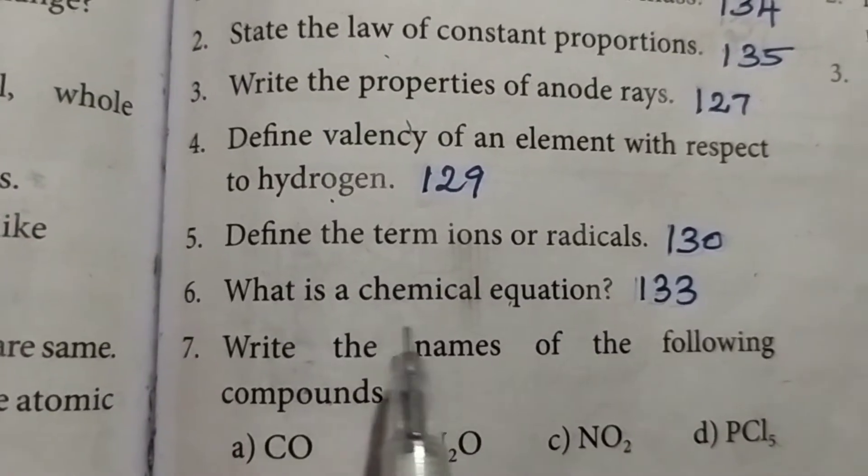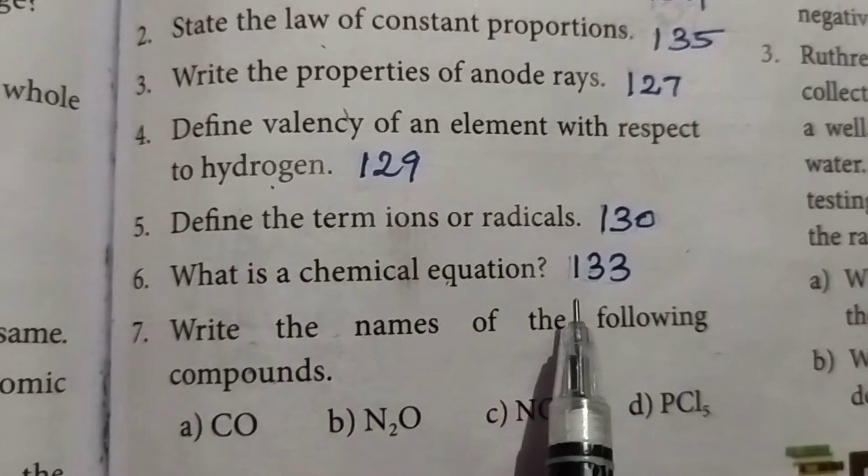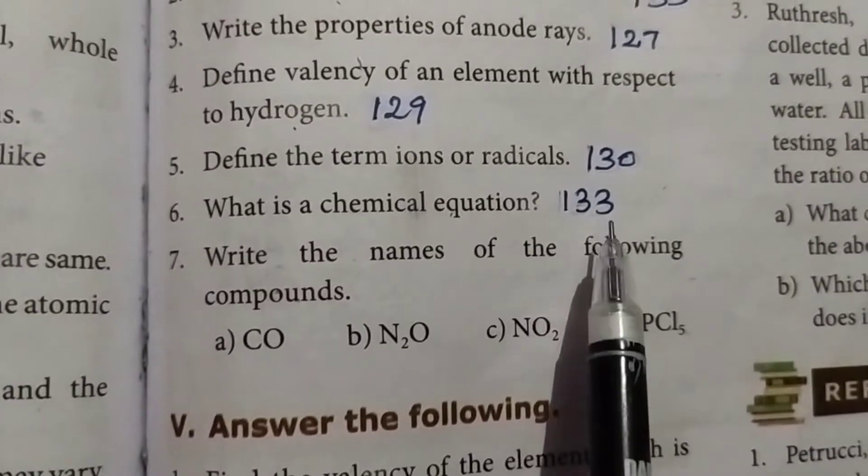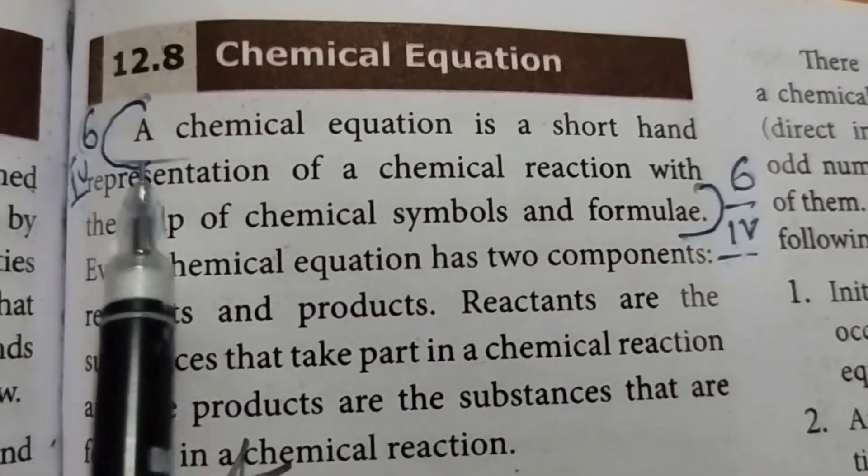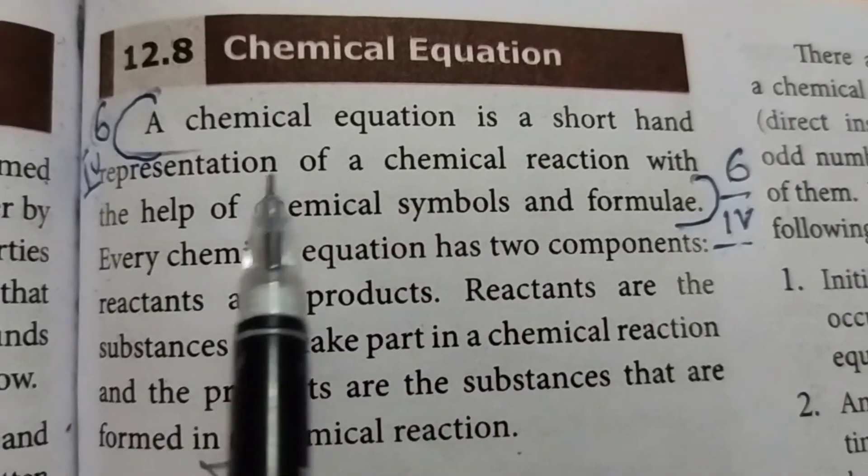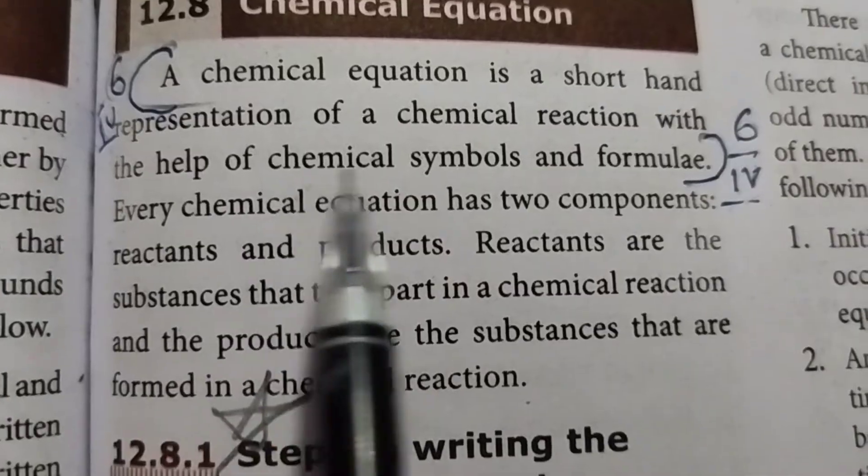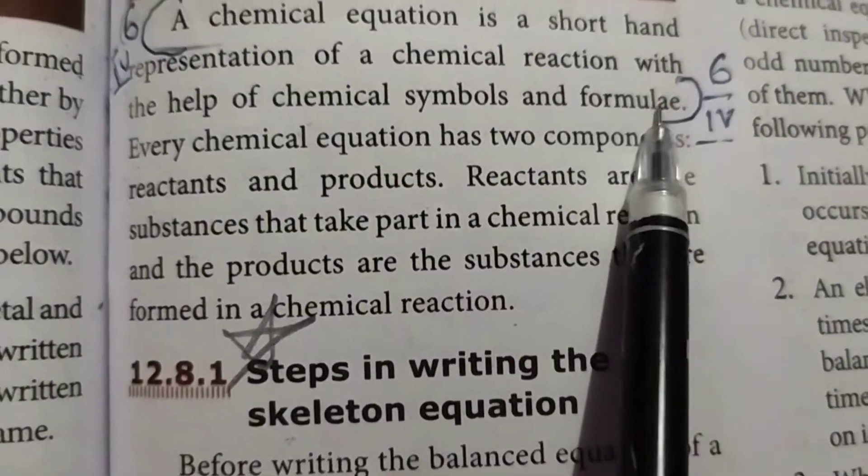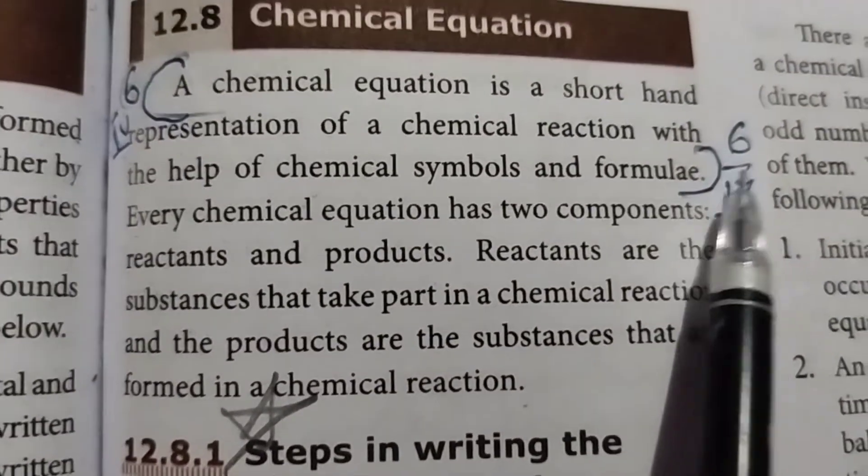Sixth question: what is a chemical equation? Take page number 133. A chemical equation is a shorthand representation of a chemical reaction with the help of chemical symbols and formulae. Fourth Roman letter, sixth question answer.